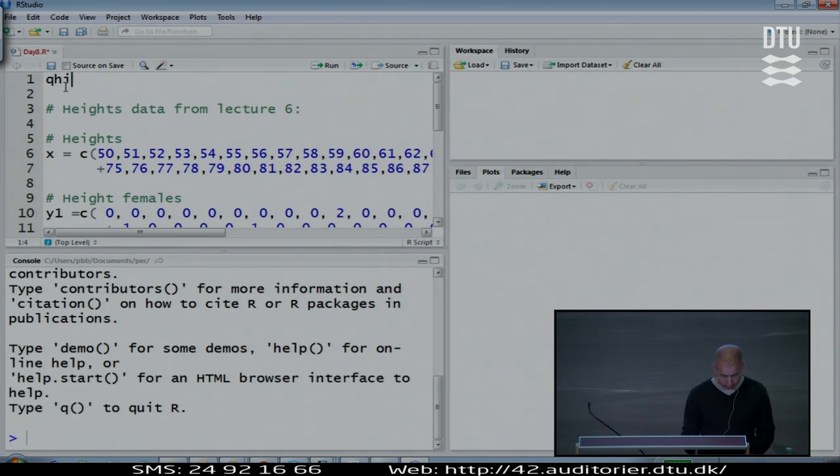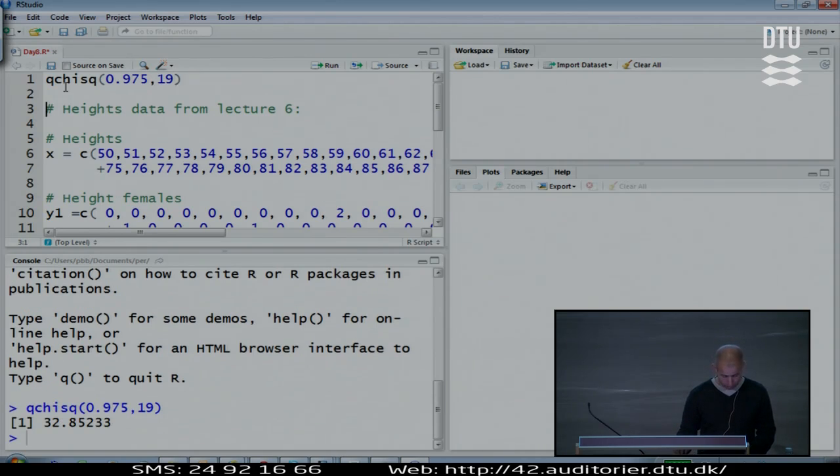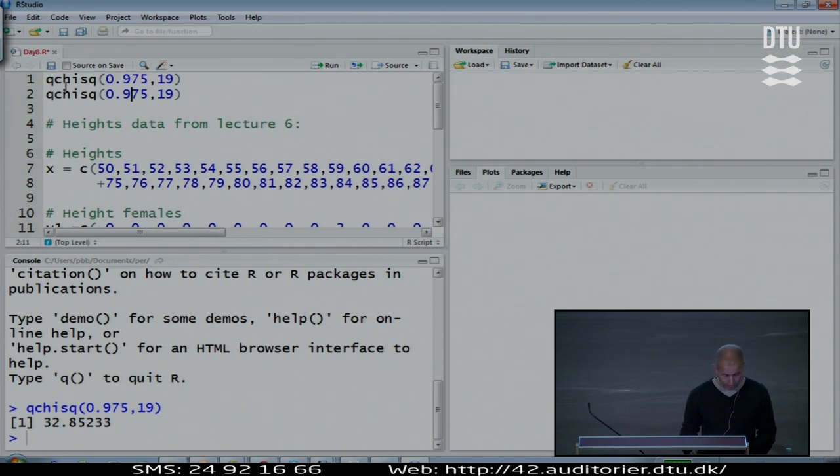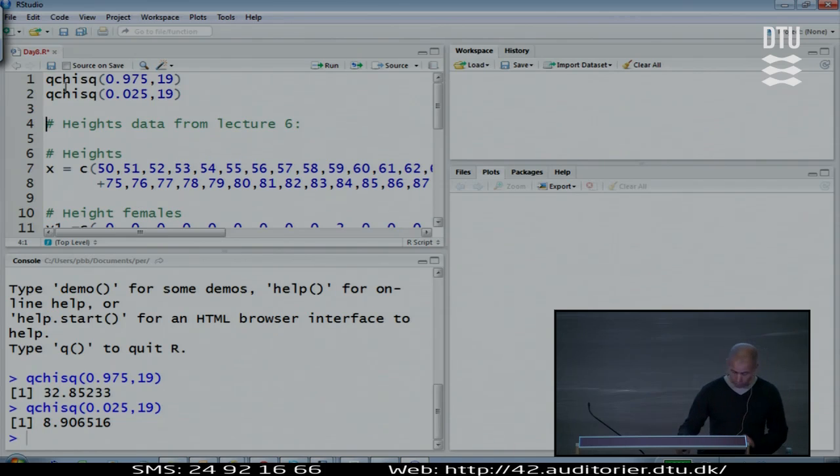There is also a quantile function. We should have the 97.5%. We should use how many degrees of freedom? Nineteen. This number was 32. We should also find the 2.5% point like this.